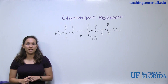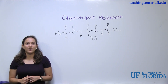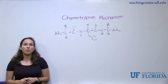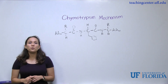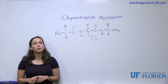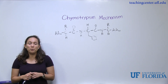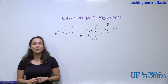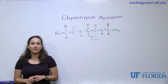Before we get into the mechanism, you need to understand what chymotrypsin does. Chymotrypsin is a digestive enzyme which acts in the duodenum of the small intestine, where it helps break down proteins through a process known as proteolysis. Recall that forming a peptide bond requires removal of water through a dehydration reaction, so breaking a peptide bond requires adding water through a hydrolysis reaction. Chymotrypsin performs proteolysis through hydrolysis.